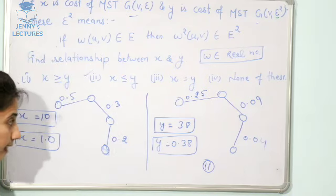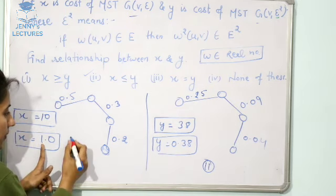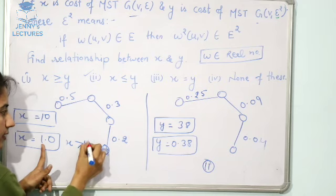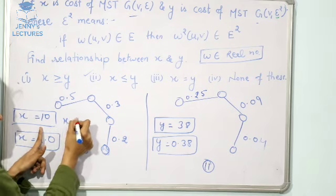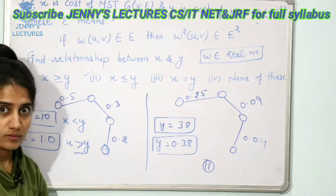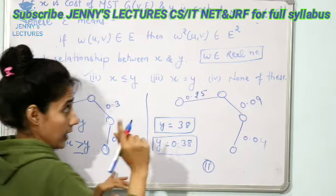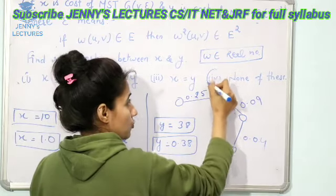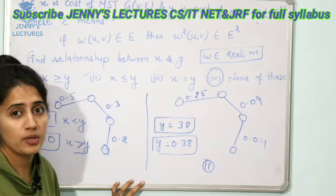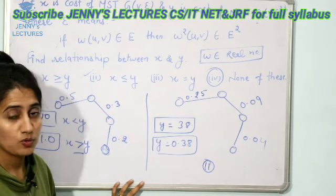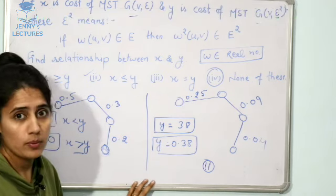Now, check out what is the relationship. X is 1, Y is 0.38. In this case, X is greater than Y. But in the first case, X is less than Y. So, you cannot say X is greater than Y or less than Y. So, the answer of this question would be this one: none of these. We cannot find out, we cannot say there would be any relation between X and Y. Such type of questions can be asked in NET exam or maybe in GATE exam also.